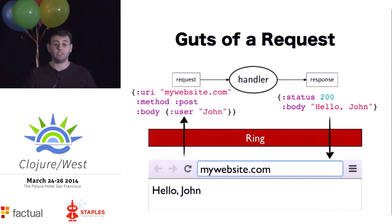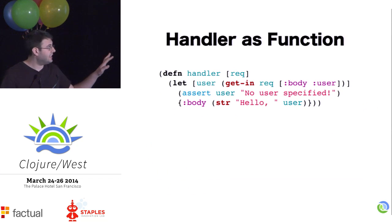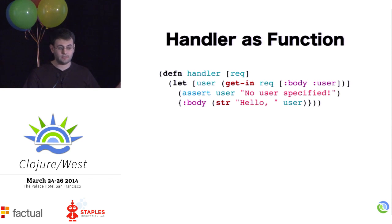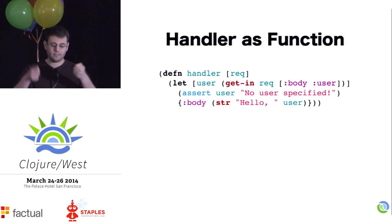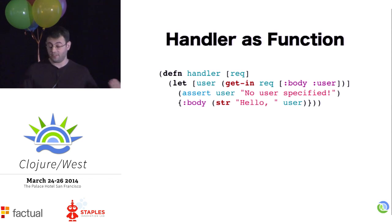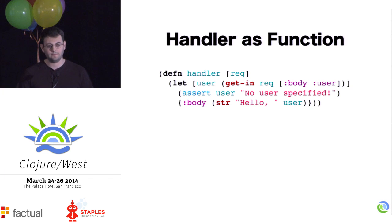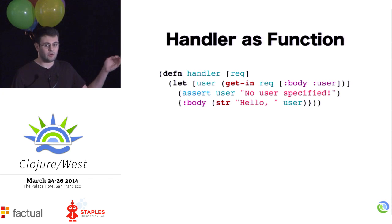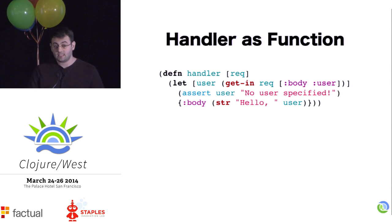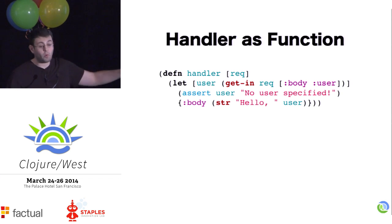Let's take a look at how we can implement this handler using Clojure. A handler is simply a function from request to response. This handler takes in the request, pulls out the user from the nested map that's in the body, binds it to the user variable, and asserts that it's present. And then if it is present, we return another map with a body that says hello to the user. This handler is doing something very simple, but there's still a lot of boilerplate code around it — we have this let binding and the assert. As you're pulling more and more things out of the request, this boilerplate grows and grows.